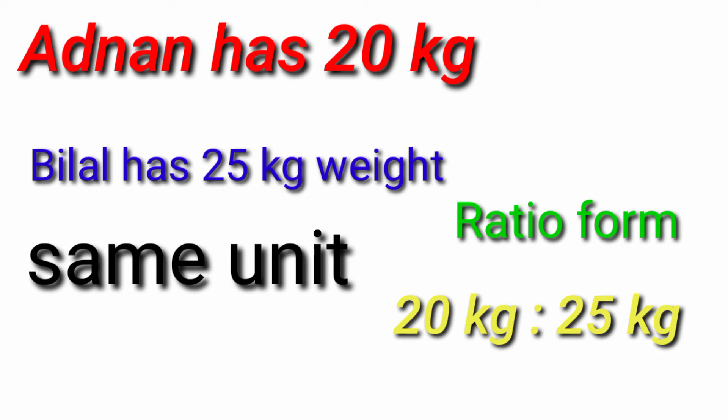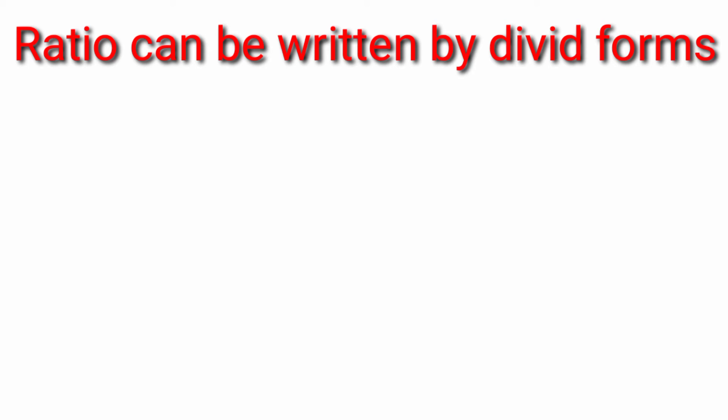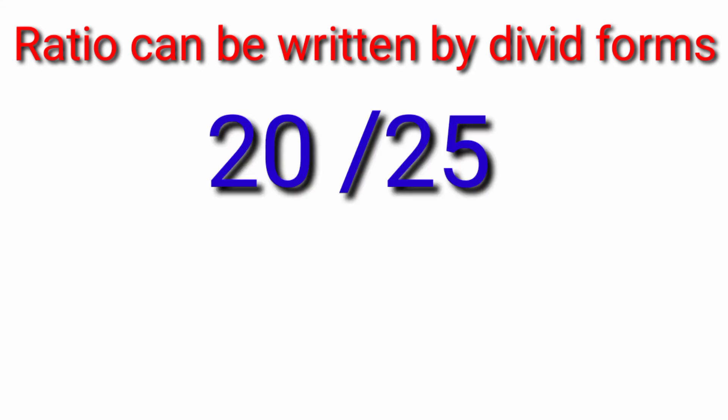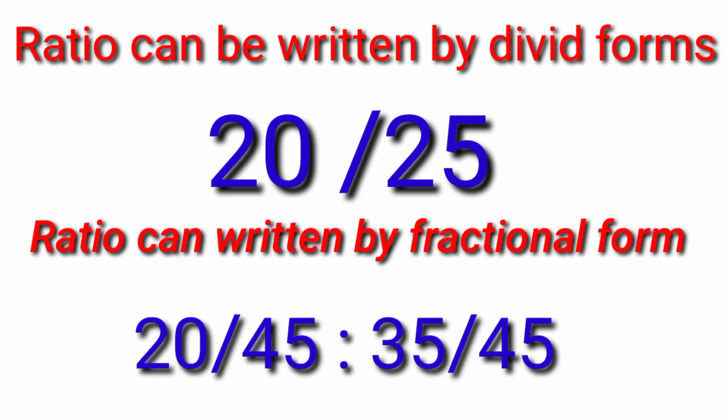Ab likh liya 20 kg ratio 25 kg. Ratio can be written by divide form 20 divided by 25. Then the ratio can be written by fraction form 4 divided by 5.